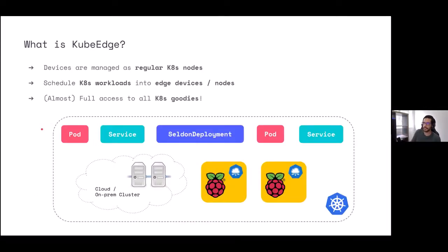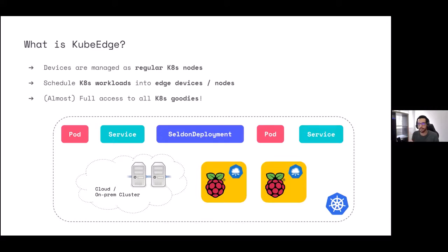KubeEdge essentially allows us to manage our edge devices as regular Kubernetes nodes. In Kubernetes, nodes are just an abstraction — places where Kubernetes runs pods, services, and processes. Kubernetes doesn't necessarily know what these nodes are, so once we bring in edge devices, Kubernetes just knows it has more nodes and can schedule workloads on them. Because of this transparent abstraction, it gives us almost full access to all of the Kubernetes goodies — any kind of service deployment or Kubernetes primitive works.